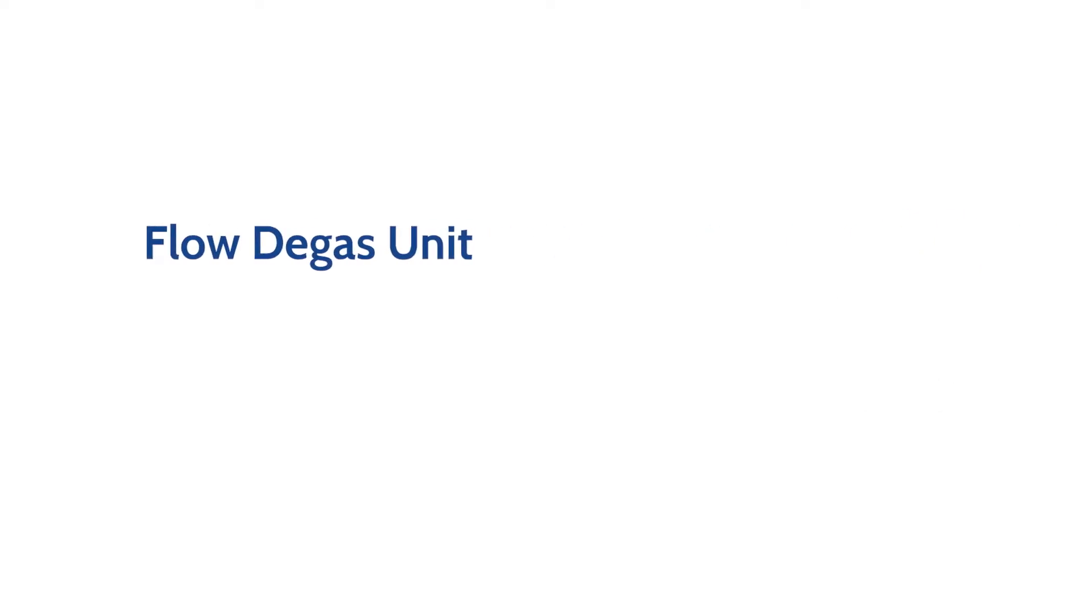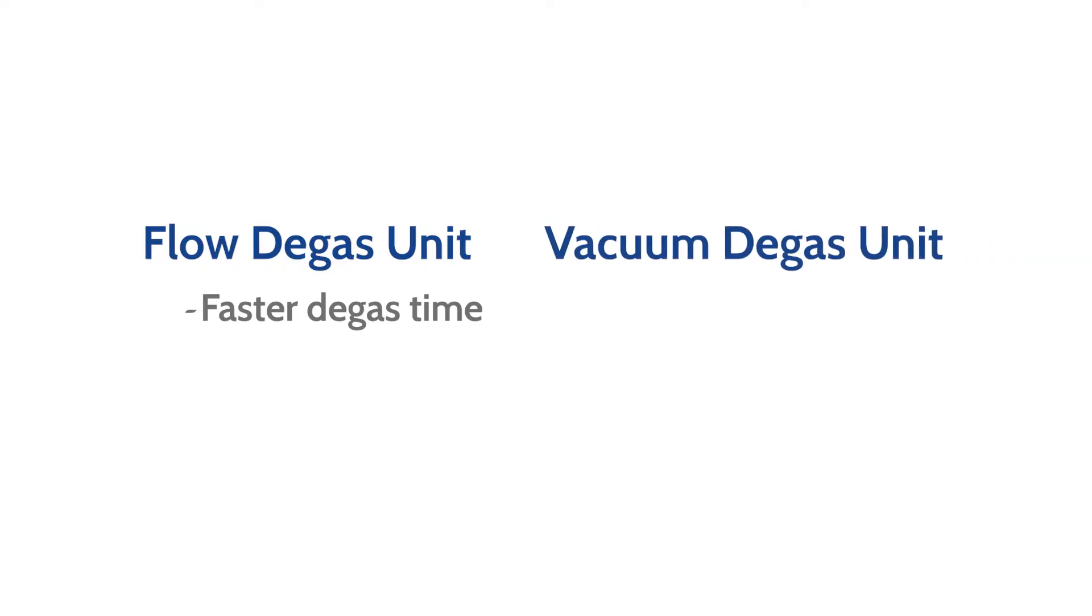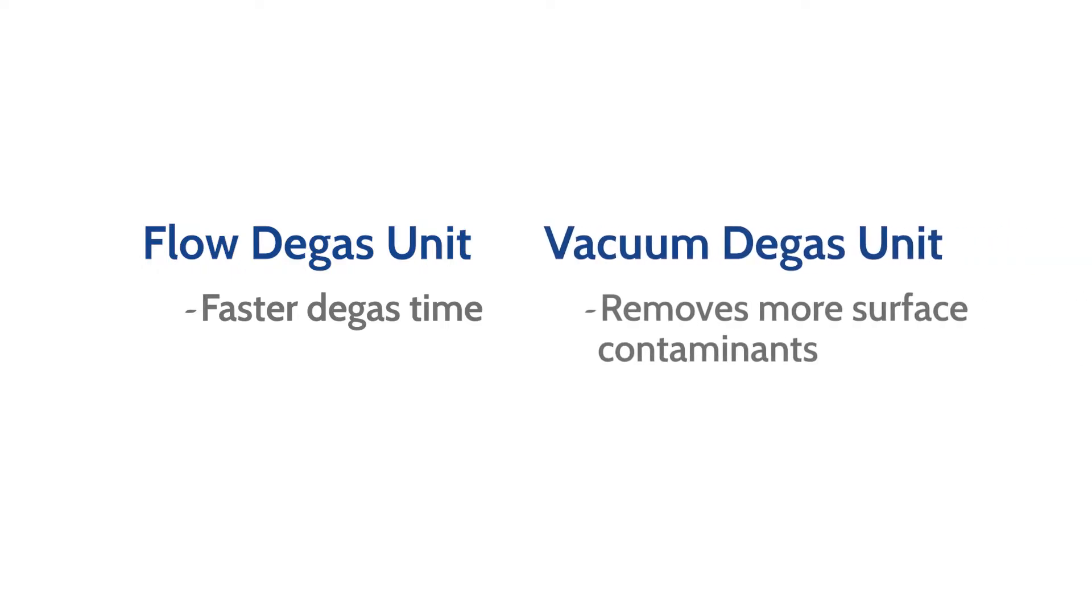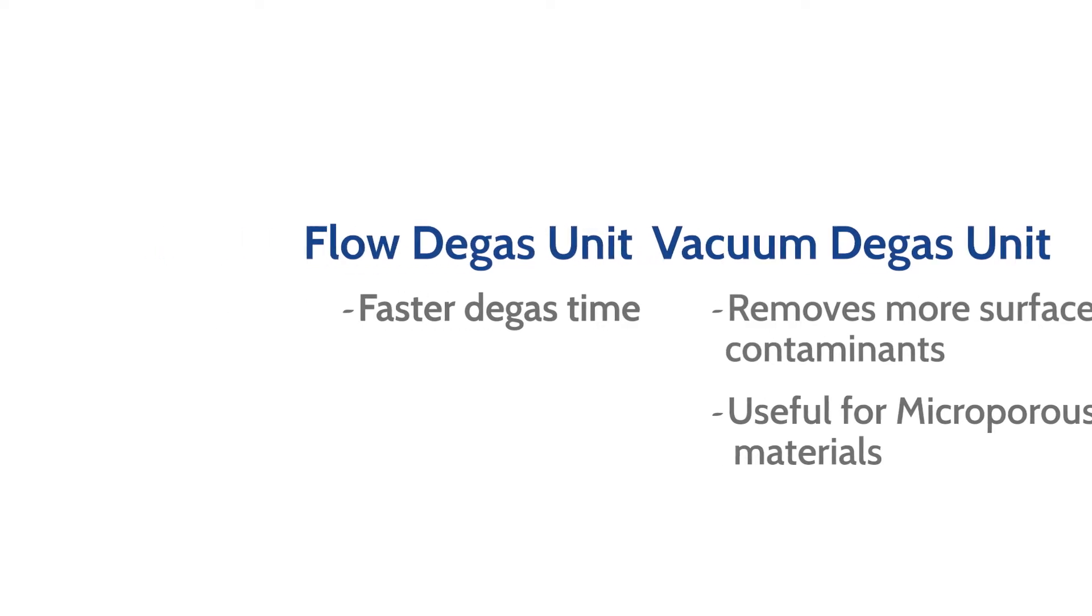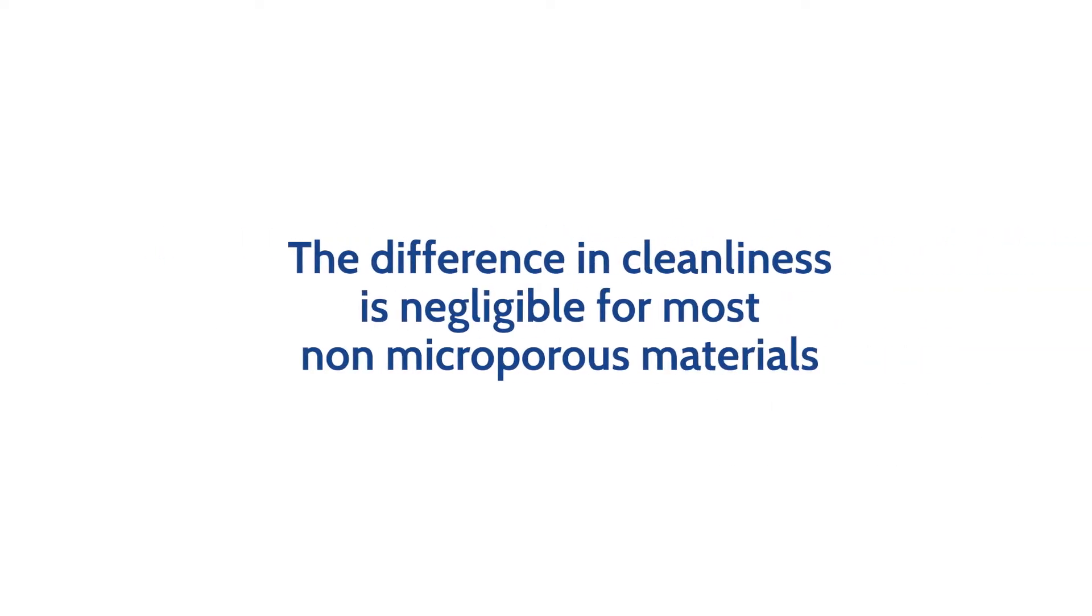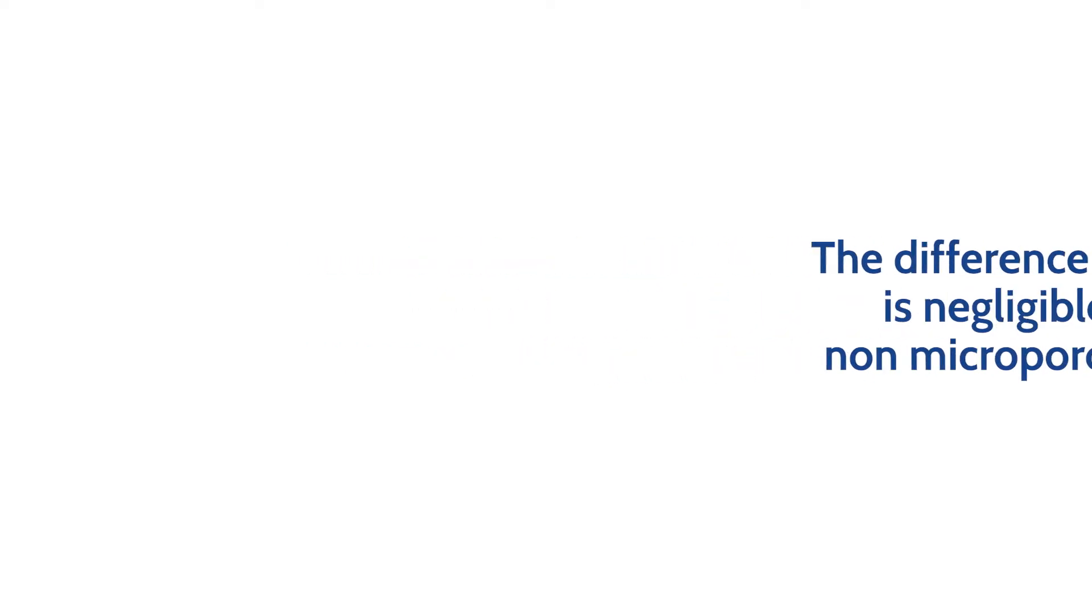A flowing degas system can be faster at removing surface contaminants than a vacuum system. The vacuum degas system has the ability to remove more surface contaminants and is especially useful for microporous materials. The difference in cleanliness is negligible for most non-microporous materials. Focus should be placed on temperature and degas time.